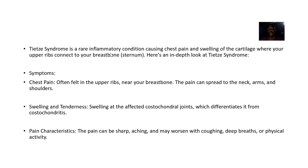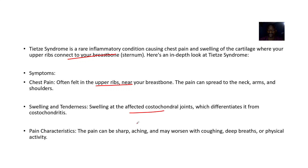It's a rare inflammatory condition causing chest pain or swelling of the cartilage where your upper ribs connect to the breastbone. It is itself an inflammatory condition, but there is actually swelling of the cartilage. The swelling at the affected costochondral joints is what differentiates it from costochondritis — costochondritis is just normal inflammation, but Tietze's syndrome involves actual swelling.